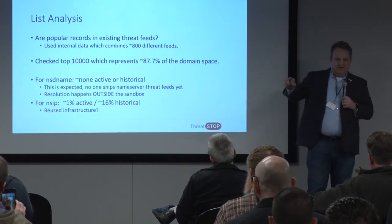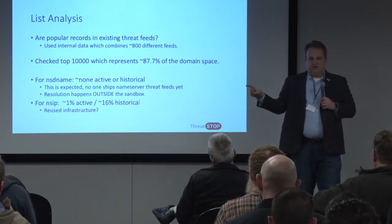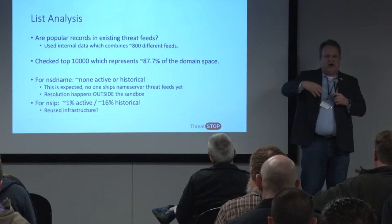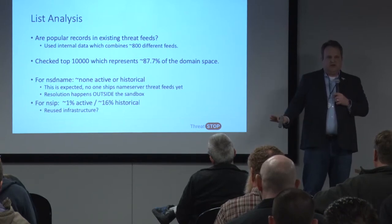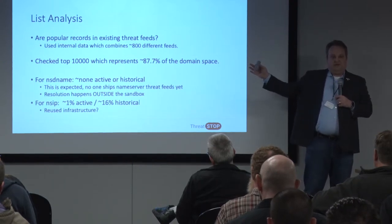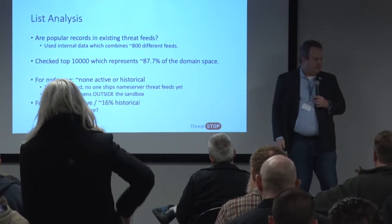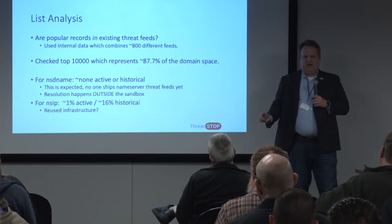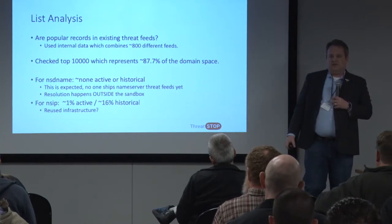For the NSD name — which is the RPZ name for the actual authoritative name server host name — I didn't see any instances of those in threat feeds. You'd expect that, because none of the automated systems are inline with the resolver. For NSIP, on the other hand, there was 1% active and about 16% historical of the top 10,000 name servers that control 90% of the internet have made their way into threat feeds. That indicates there needs to be some level of scrubbing. The lower band at number 10,000 still controlled like 300,000 domains — so you're still talking large-scale authoritative name servers even down there.